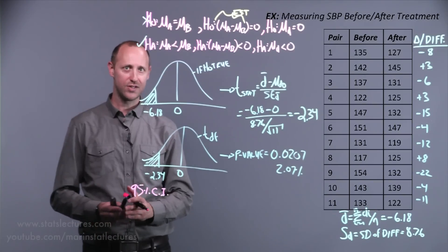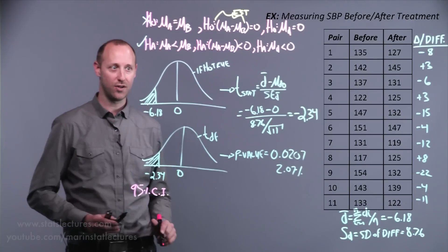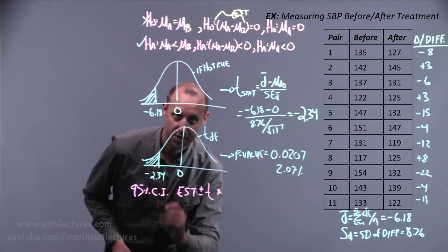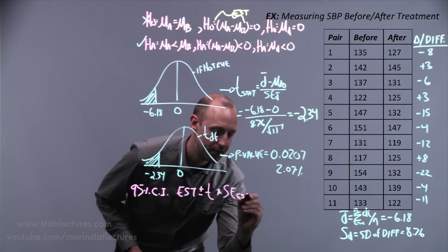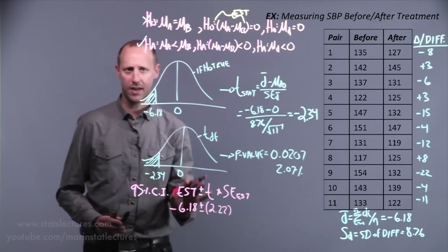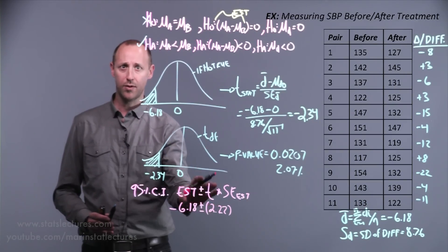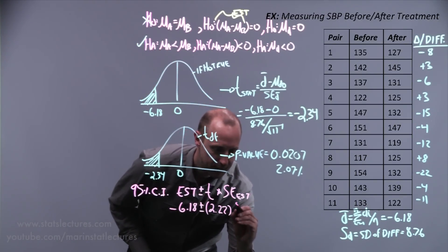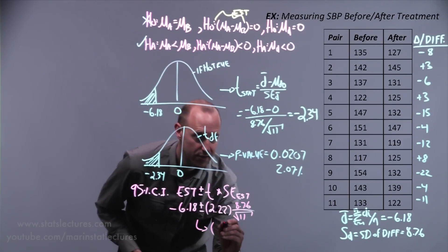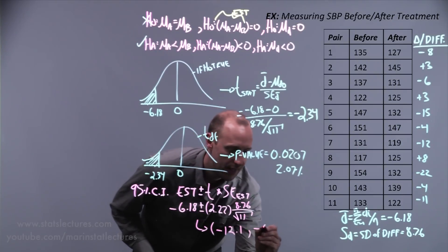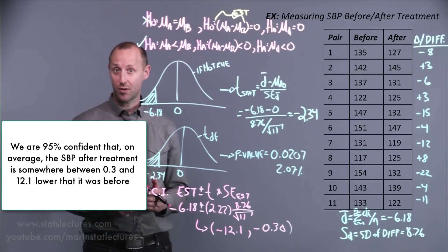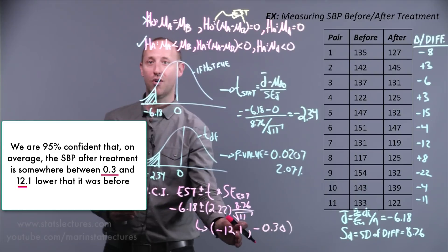We can change to 99% confidence by going out slightly more than two standard errors. Let's make a 95% confidence interval: our estimate of negative 6.18, plus or minus the t-value of 2.22 times the standard error. We can find the exact t-value from a table or software. Working that out gives us an interval of negative 12.1 to negative 0.30. We're 95% confident that on average, the systolic blood pressure after treatment is somewhere between 0.3 and 12.1 units lower than it was before.